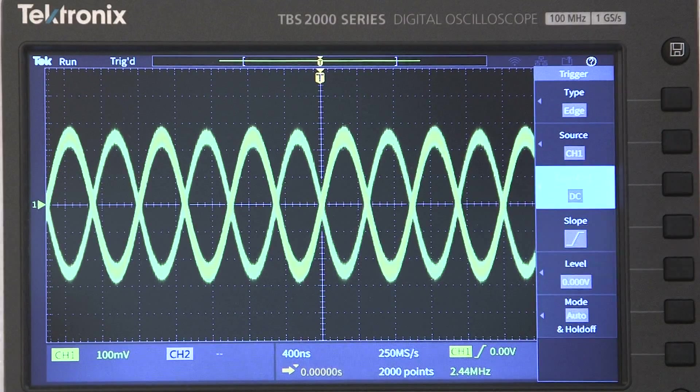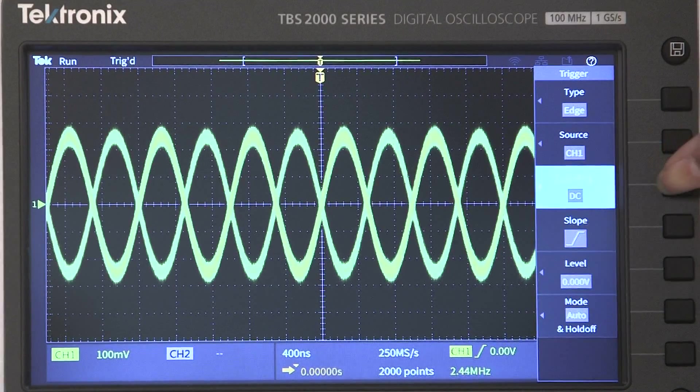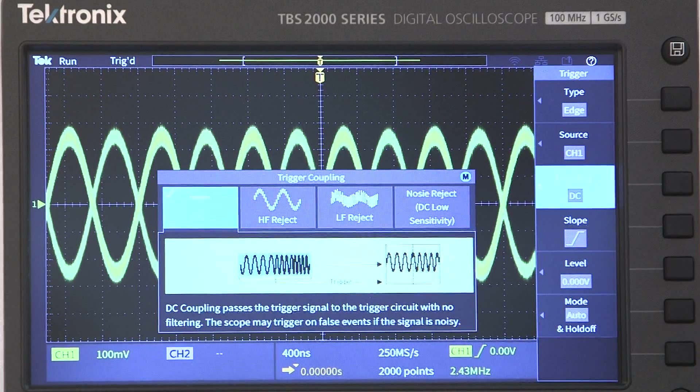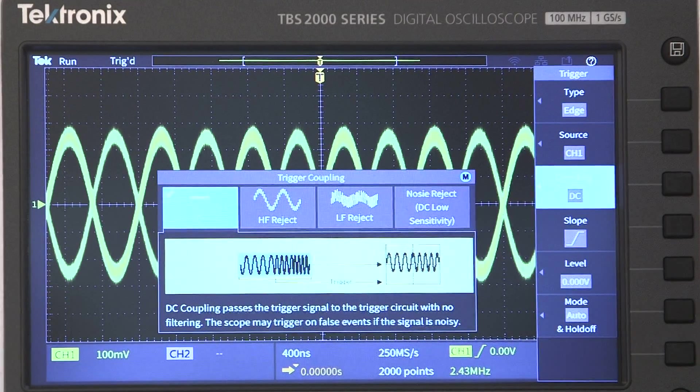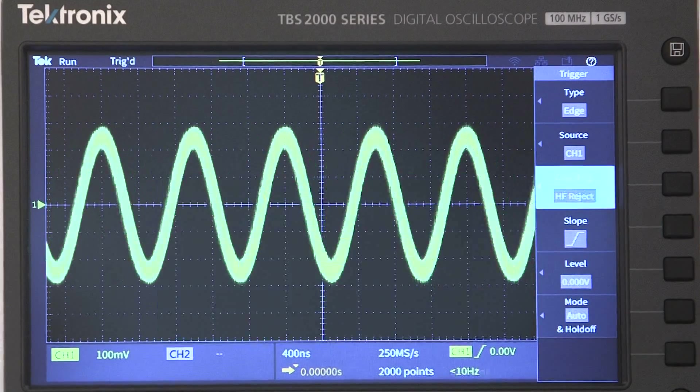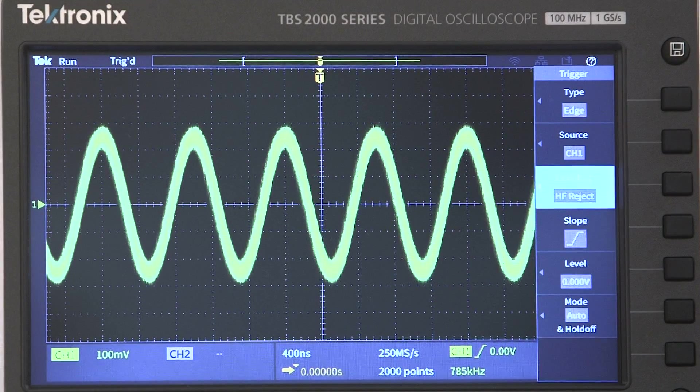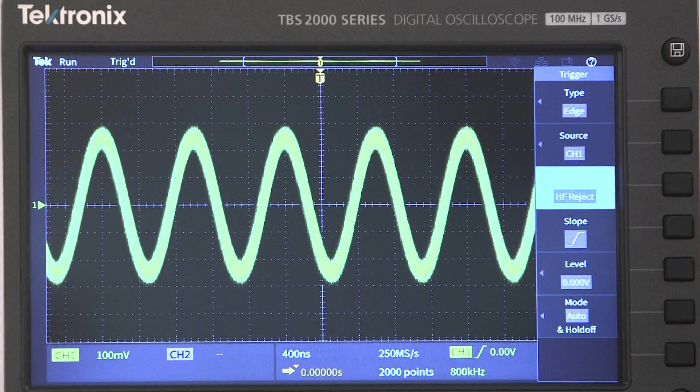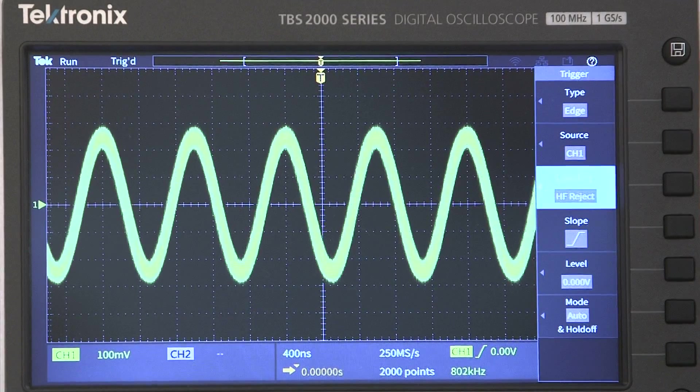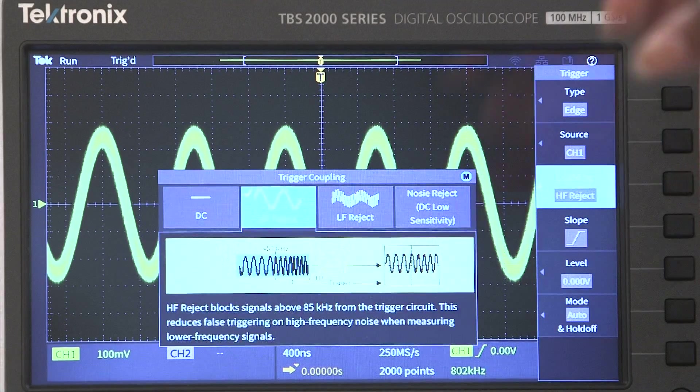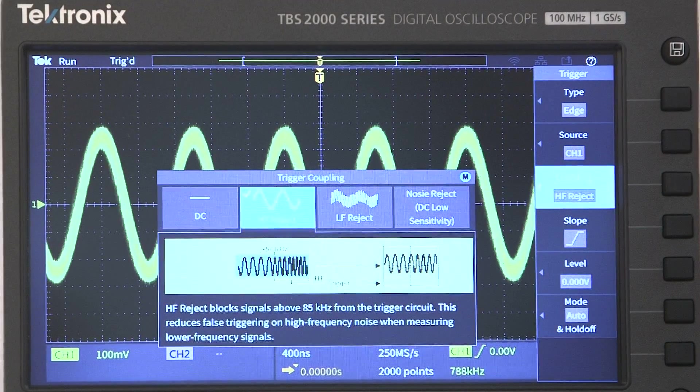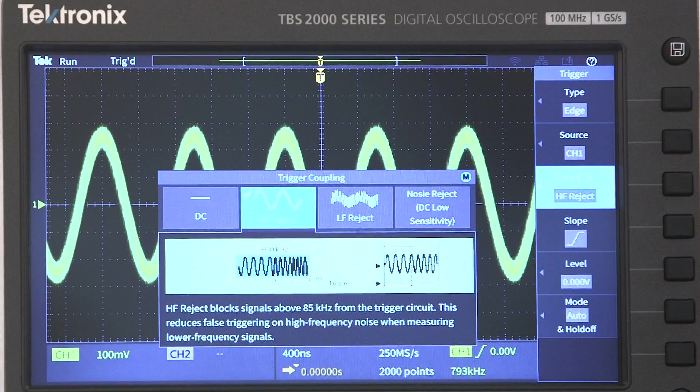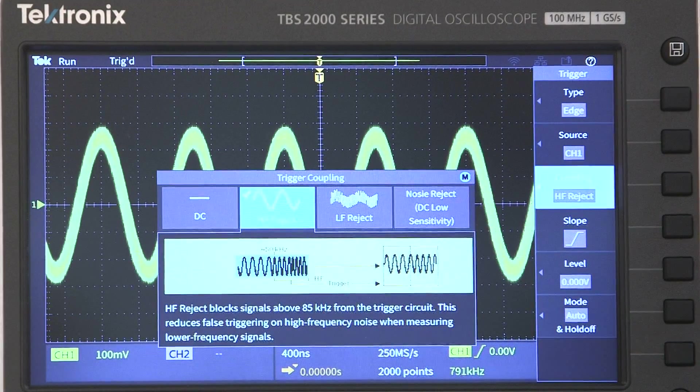I can choose HF reject option out of the coupling menu, and the scope will filter out high frequency noise from the trigger source. This gives me a stable, perfectly triggered waveform. You have other coupling options too. You can reject low frequencies, or you can use noise reject, which makes the trigger system a bit less sensitive to eliminate the effects of noise.